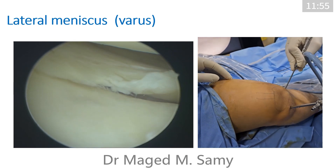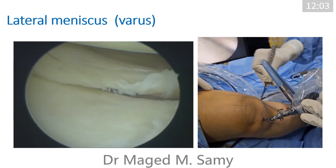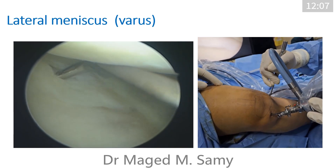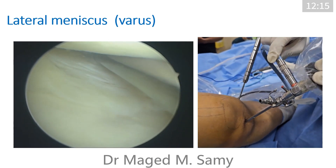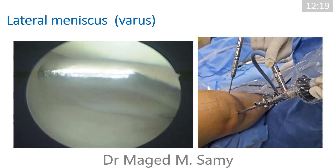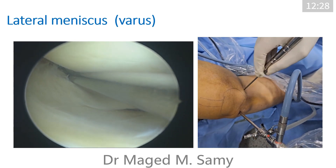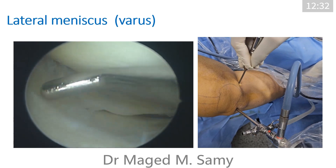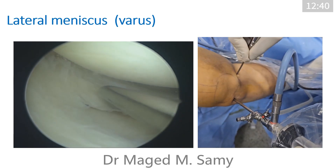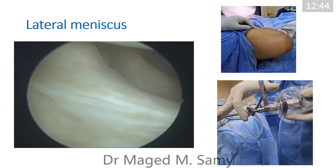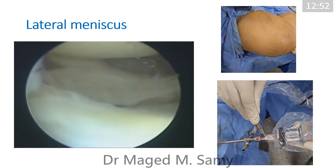For the lateral meniscus, apply varus stress on the knee to open the lateral compartment and visualize the entire lateral meniscus. This is the posterior horn, and here is the tear. Varus is applied by pressing the lower leg with the surgeon's waist against the operating table. This is the popliteal hiatus, where the popliteus tendon passes behind the lateral meniscus — the lateral meniscus is normally not attached at this point, so this is normal. This is the body and anterior horn of the lateral meniscus. You can easily palpate the whole lateral meniscus by applying varus stress.